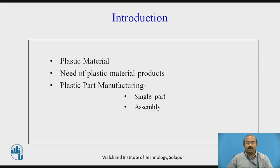In the introduction, we will discuss plastic material, the need for plastic material products, and plastic part manufacturing categories. As we know, plastic material is an advanced hydrocarbon polymer material. Because of its many advantageous properties, it is used for many wide applications today — properties like being easily moldable, reshapable, non-corrosive, non-magnetic, and a bad conductor of electricity, and so on.